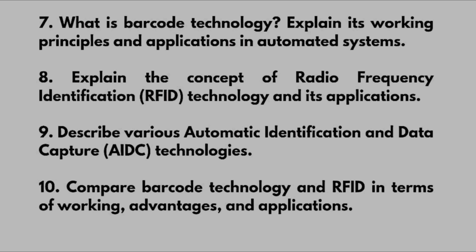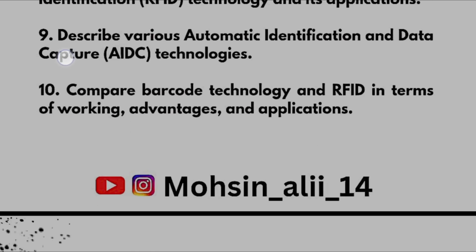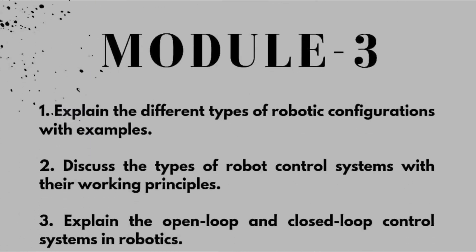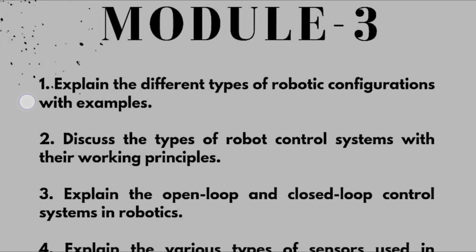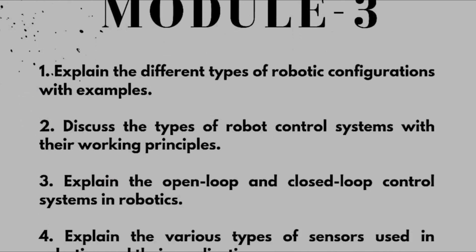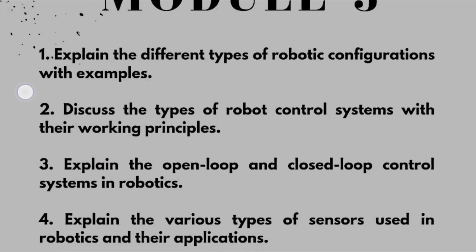You can also refer to ChatGPT for your reference — just insert the question so that you remember the key points, and by those key points you can recall whatever you have studied. Now coming to Module 3, explain the different types of robotic configurations with examples.